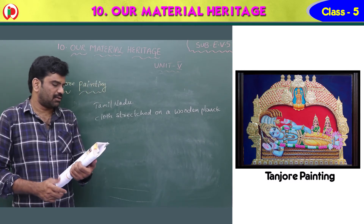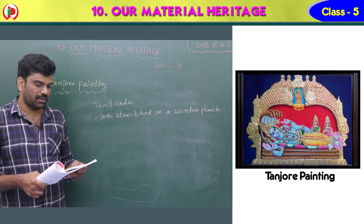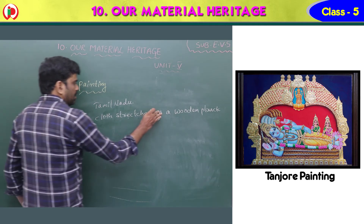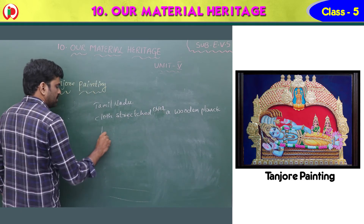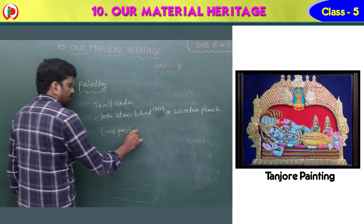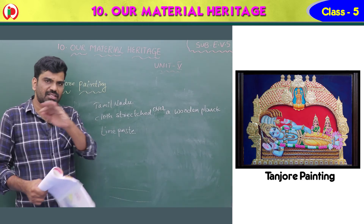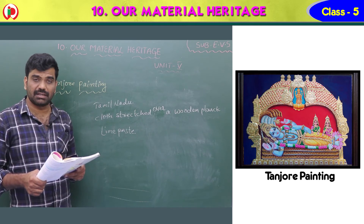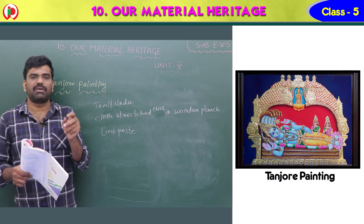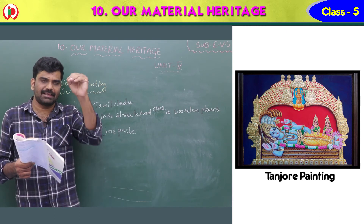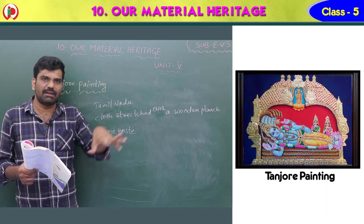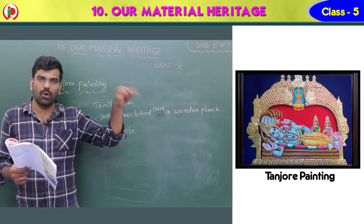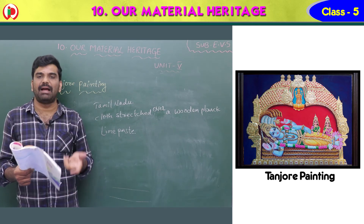Lime paste is used to make the surface smooth for painting. Then the painters draw outlines of the figures which depict plump and chubby faces — plump means fat and chubby faces. First a cloth is stretched on a wooden plank, then lime paste is used to smooth the surface, and then painters draw outlines of the figures.